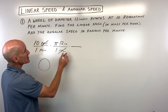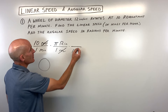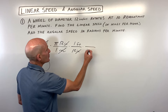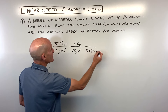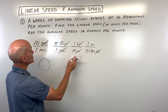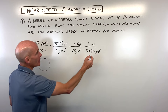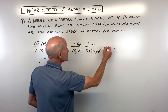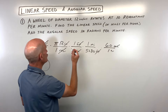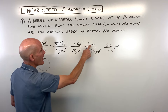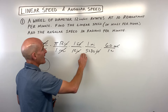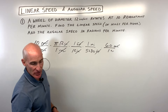We want miles per hour, so let's continue converting. There are 12 inches for every one foot, so the inches cancel. Then there are 5,280 feet for every one mile, so the feet cancel and we have miles per minute. We want miles per hour, so we use the fact that there are 60 minutes for every one hour. The minutes cancel and we're left with miles per hour. We multiply all the numerators together, all the denominators together, then divide. Let's go to the calculator.